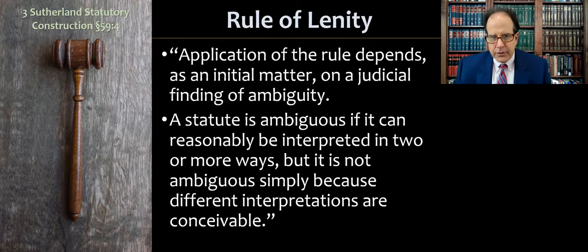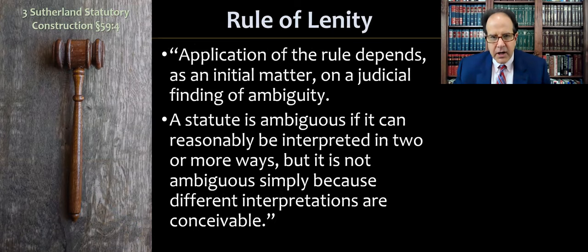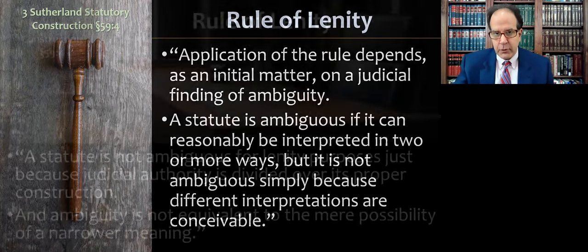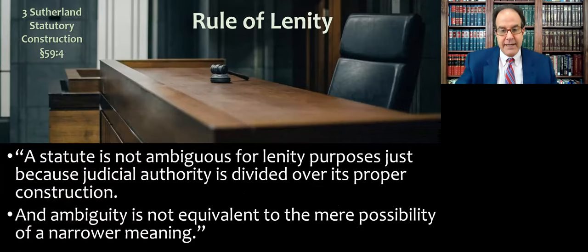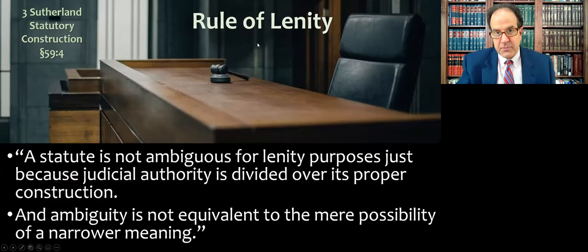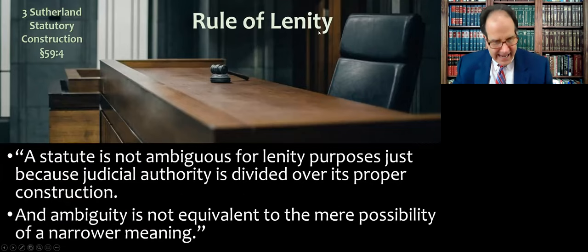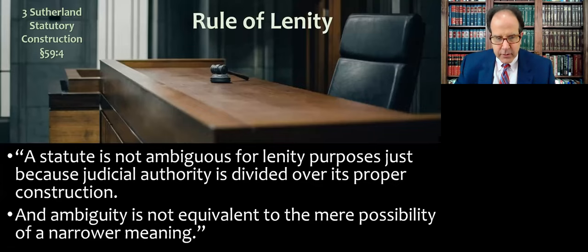Application of the rule depends, as an initial matter, on a judicial finding of ambiguity. A statute is ambiguous if it can reasonably be interpreted in two or more ways, but it's not ambiguous simply because different interpretations are conceivable. A statute is not ambiguous for lenity purposes just because judicial authority is divided over its proper construction, and ambiguity is not equivalent to the mere possibility of a narrower reading.